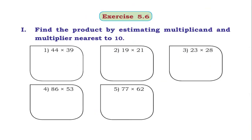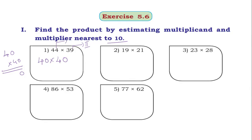Next: Find the product by estimating the multiplicand and multiplier to the nearest 10 — 44 × 39. Estimating 44: unit digit is 4 — first case, so estimation is 40. Estimating 39: unit digit is 9 — second case, so estimation is 40. 40 × 40 = 1600. The answer is 1600.